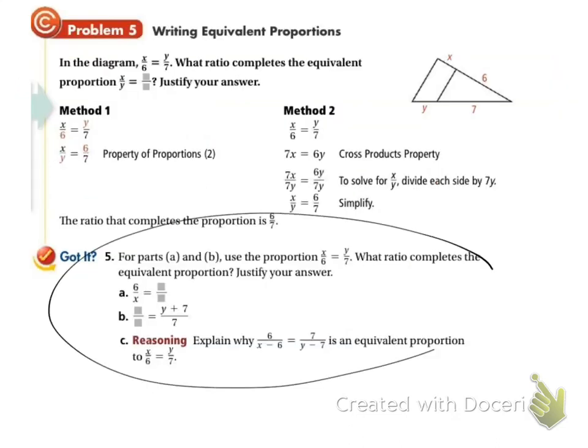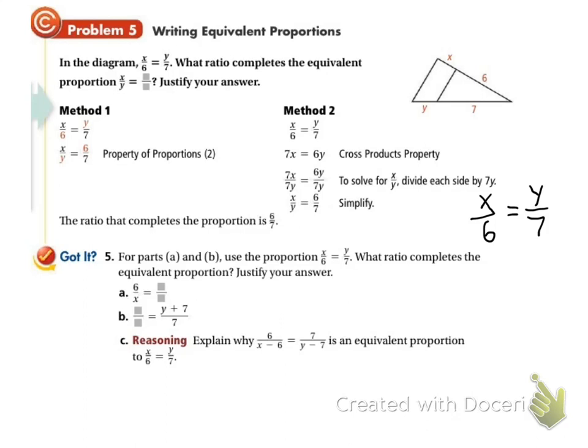Let's look at our got it problem. We are told that this proportion is true, x over 6 equals y over 7. Then we're going to look at these that they have for us to fill in the blank and look how it changed and how well we can fill it in. We've got 6 over x equals blank over blank. So what I do is I compare this new one to this old one. We've now got 6 over x and it used to be x over 6. So we flipped it. So I need to flip the second fraction or the second ratio so we get 7 over y.